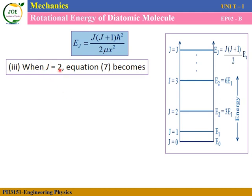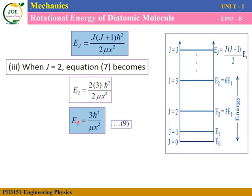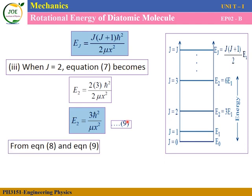For J equals 2: E2 equals 2 times (2+1) times h-cross squared divided by 2 mu x squared. That is 2 times 3 equals 6, divided by 2, giving 3. So E2 equals 3 h-cross squared divided by mu x squared. This is equation number nine.